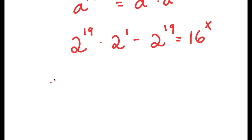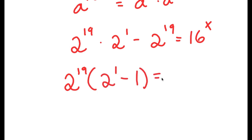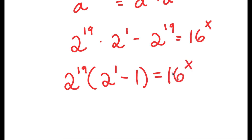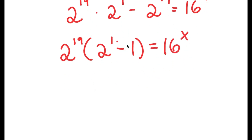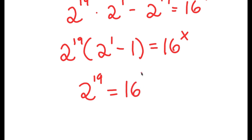If I factor out 2 to the power of 19 from my left-hand side, I get 2 to the power of 19 times 2 to the power of 1 minus 1 is equal to 16 to the power of x. And 2 to the power of 1 minus 1 is simply equal to 1, and anything times 1 is itself. So I have 2 to the power of 19 is equal to 16 to the power of x.